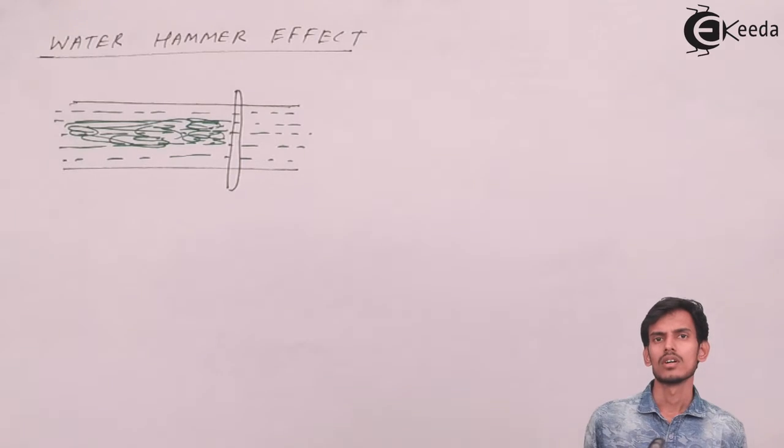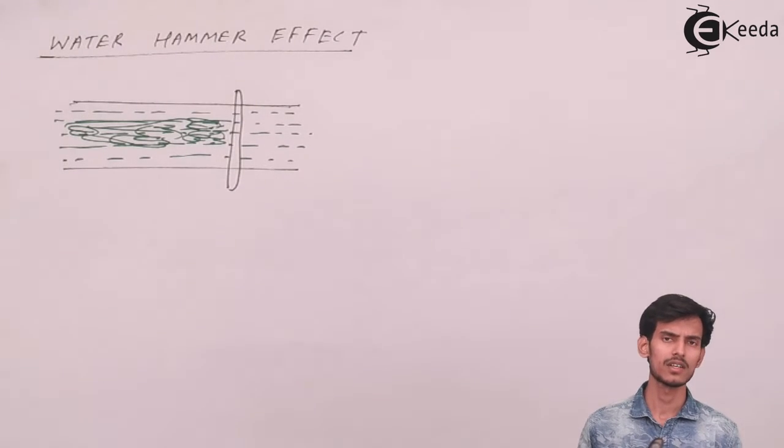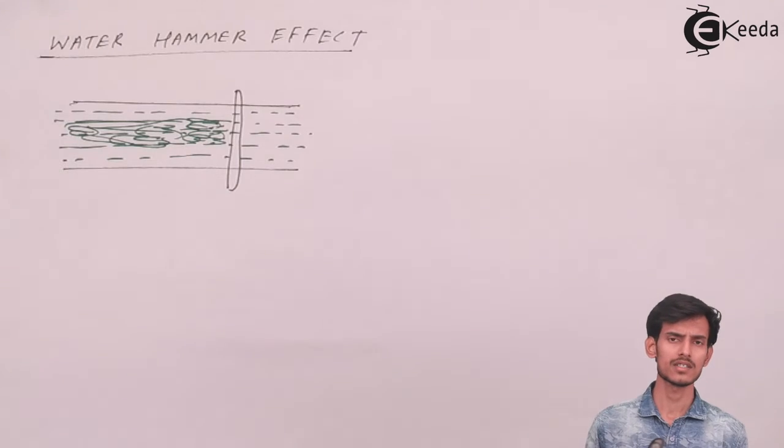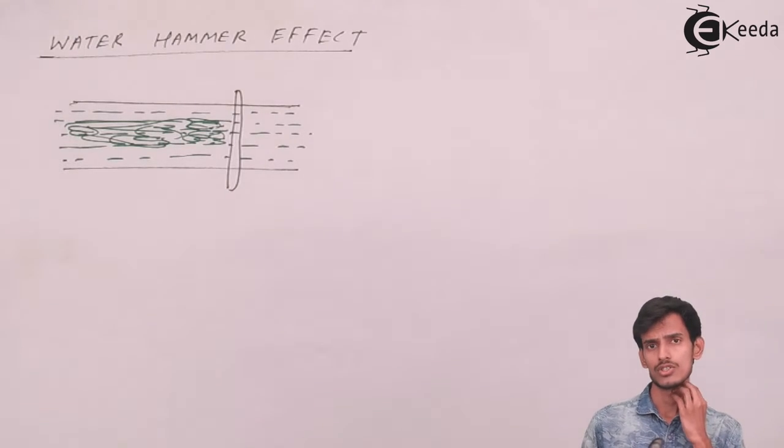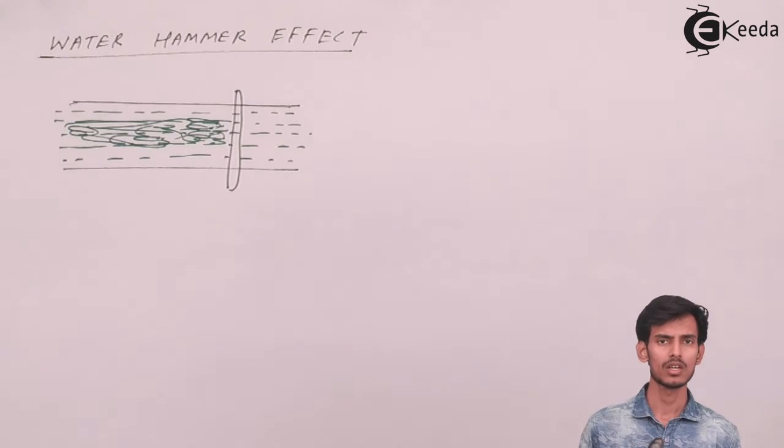So the precaution that you should take to avoid water hammer is the velocity of the fluid should be slowly reduced. It should not be instantaneously reduced to zero because that will lead to sudden increase in pressure, called stagnation pressure, which will ultimately damage the pipe and make the joints weak.